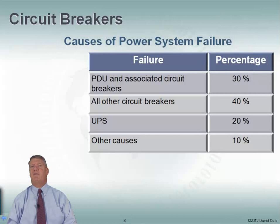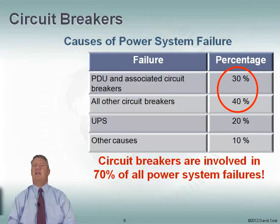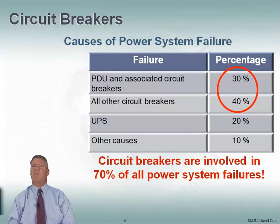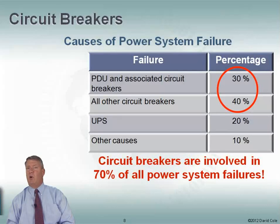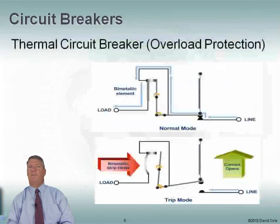Causes of power system failures: PDUs, circuit breakers, UPSs, and other causes. Look at these two together — 70% of all power system failures involve circuit breakers. So it's very important that we understand them. When circuit breakers are a problem, it's one of two things: either bad circuit breaker coordination, which we just talked about, or not understanding when the circuit breaker is supposed to trip. We'll talk about that in just a minute.